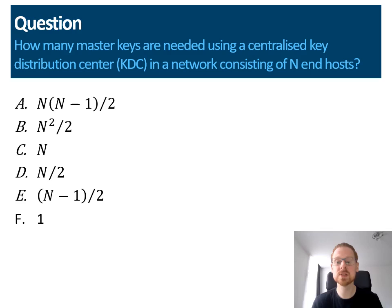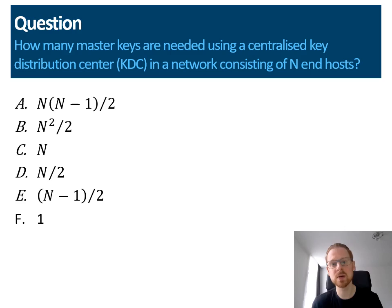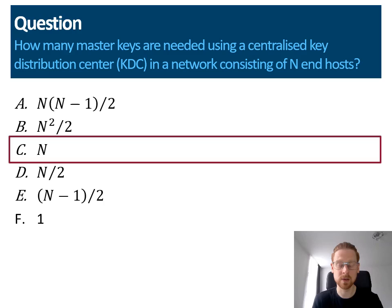Recall that fully decentralized key distribution was not very scalable. It required n times n minus 1 divided by 2 keys to be maintained in a network with n hosts. How many master keys are needed when using a centralized key distribution center in a network consisting of n hosts? The correct answer is n. Only n keys are needed — the key distribution center needs to maintain one key with each of the end hosts in the network, and this is sufficient to ensure that keys can be securely shared with anyone in the network.